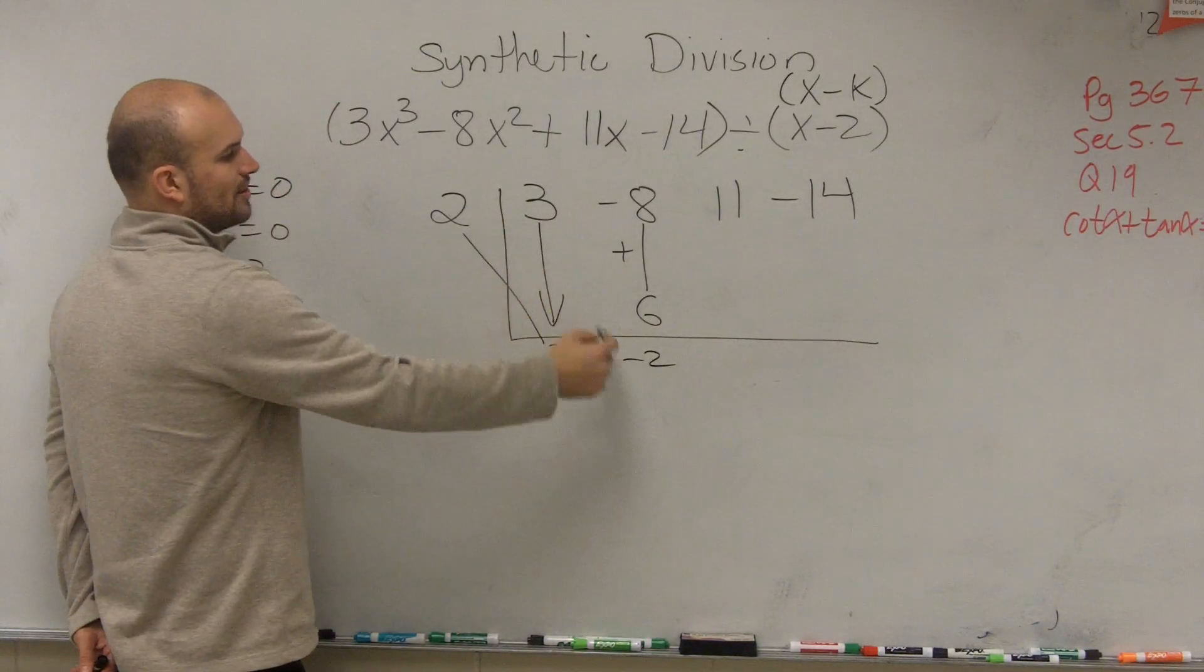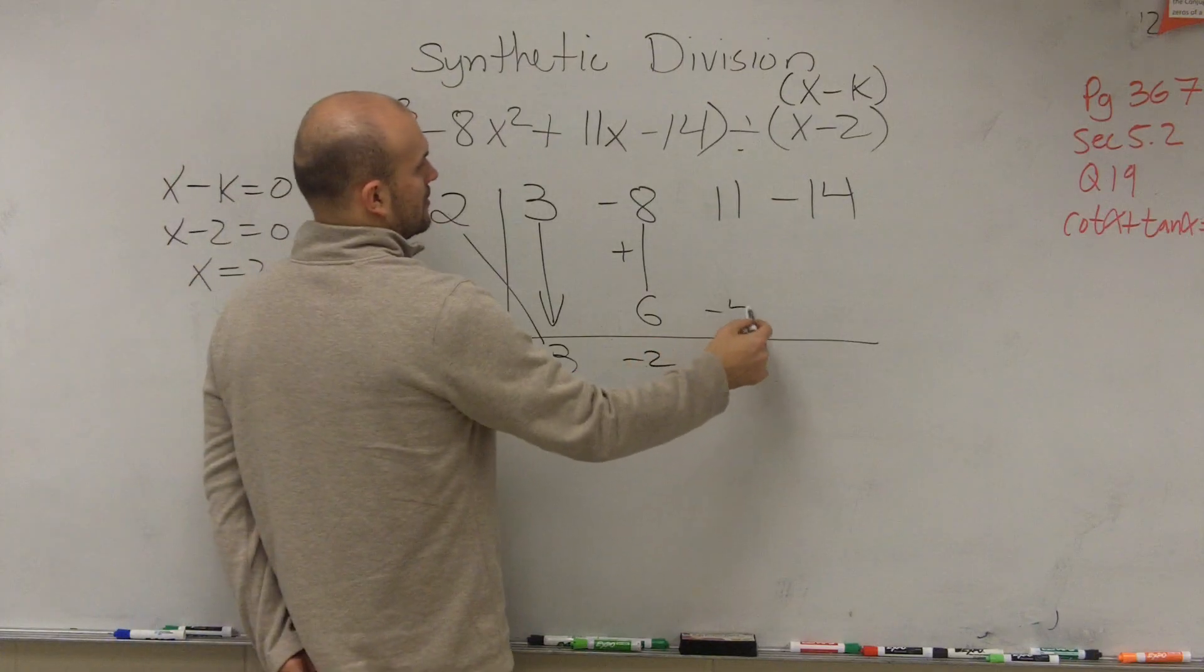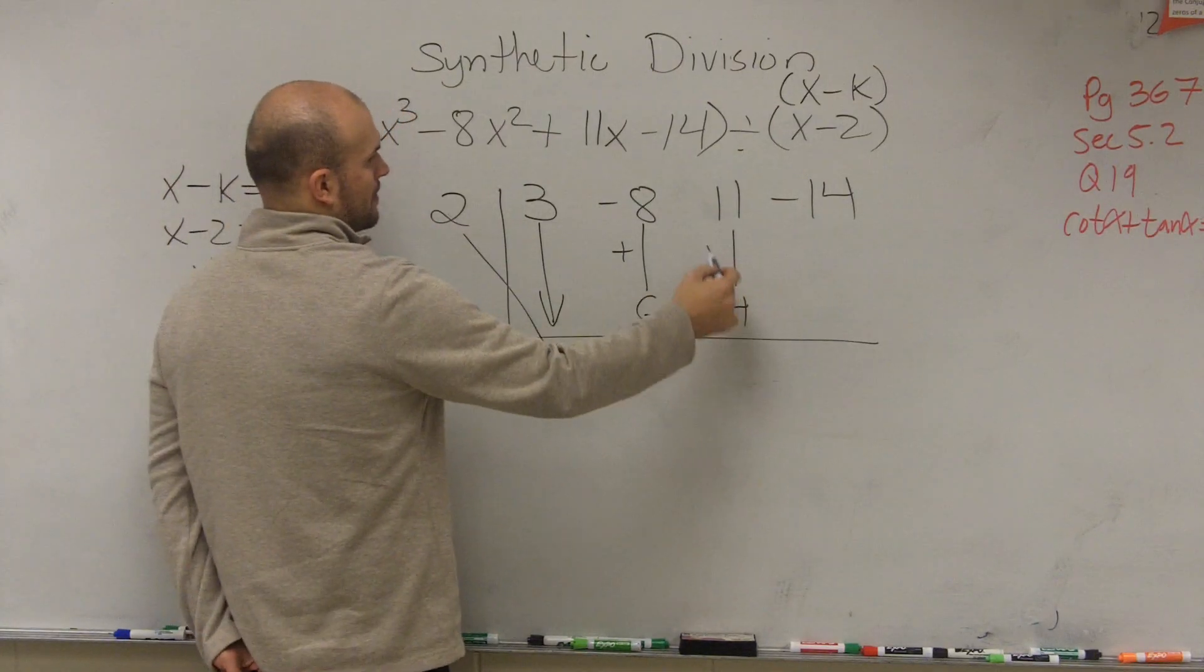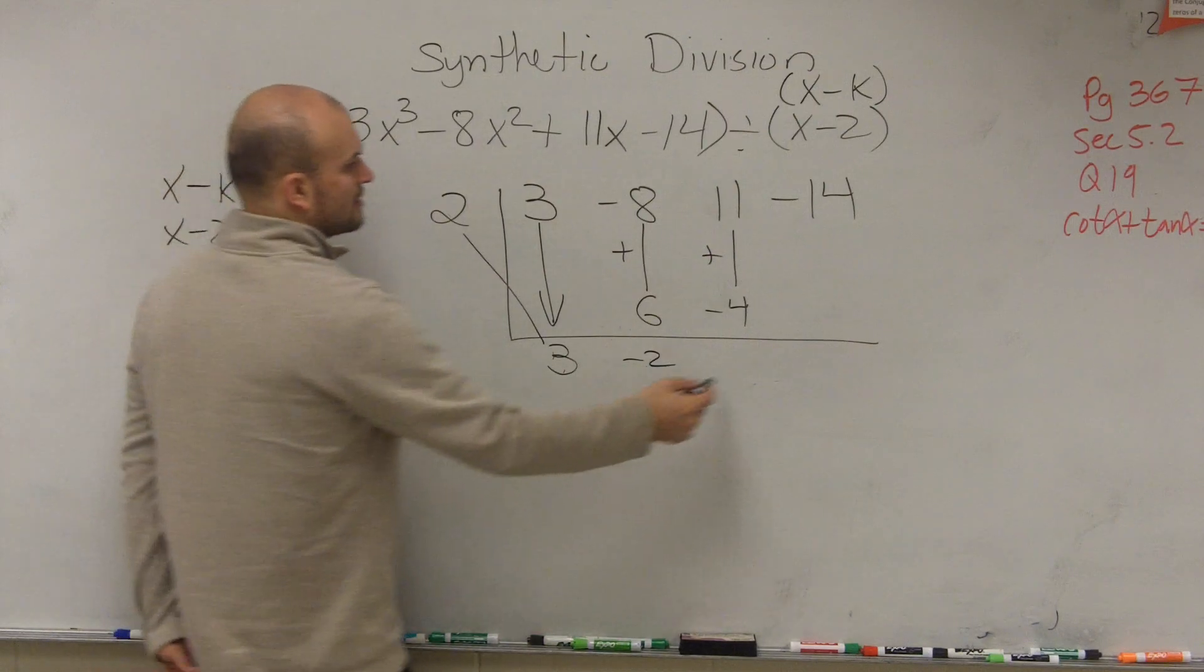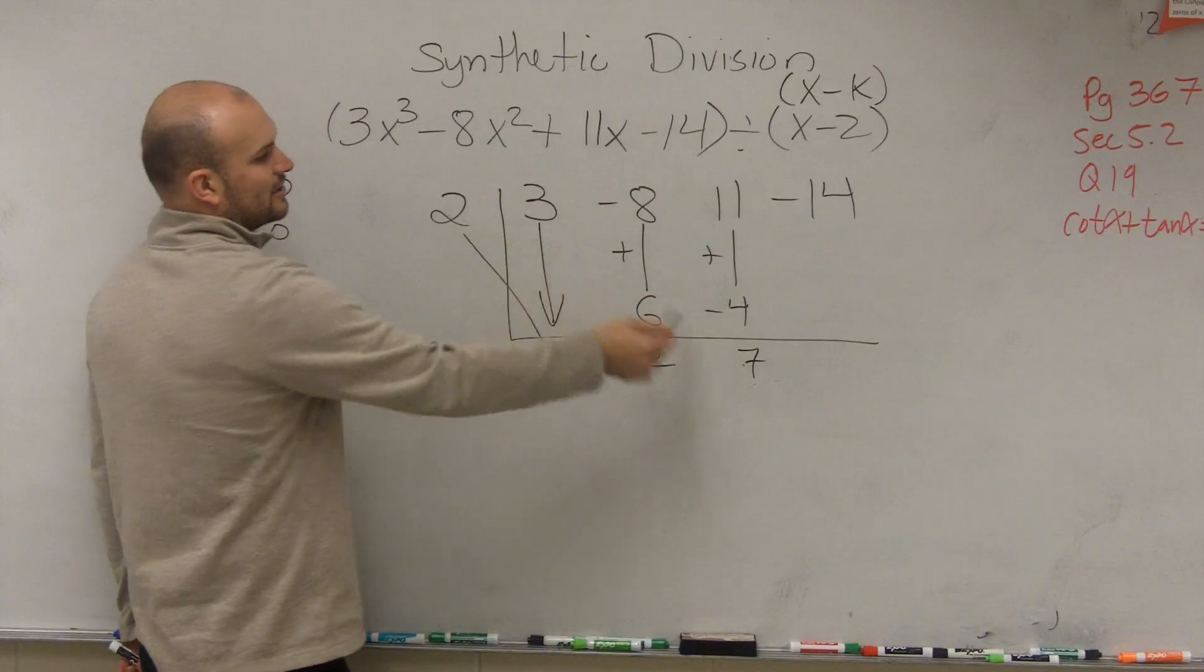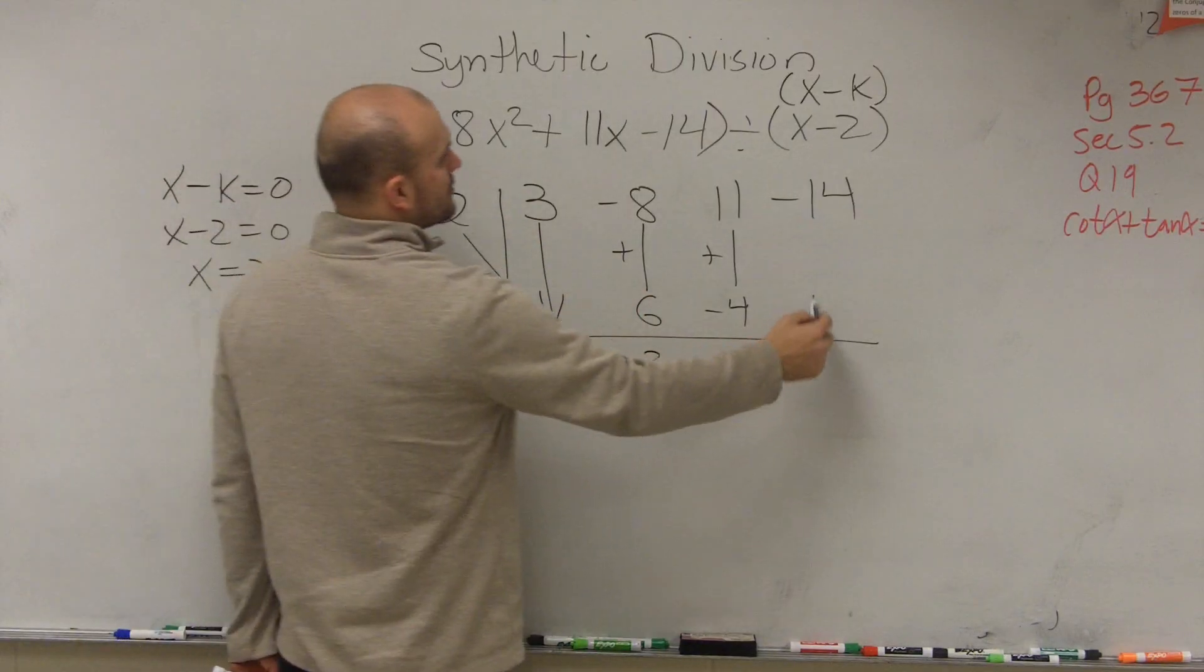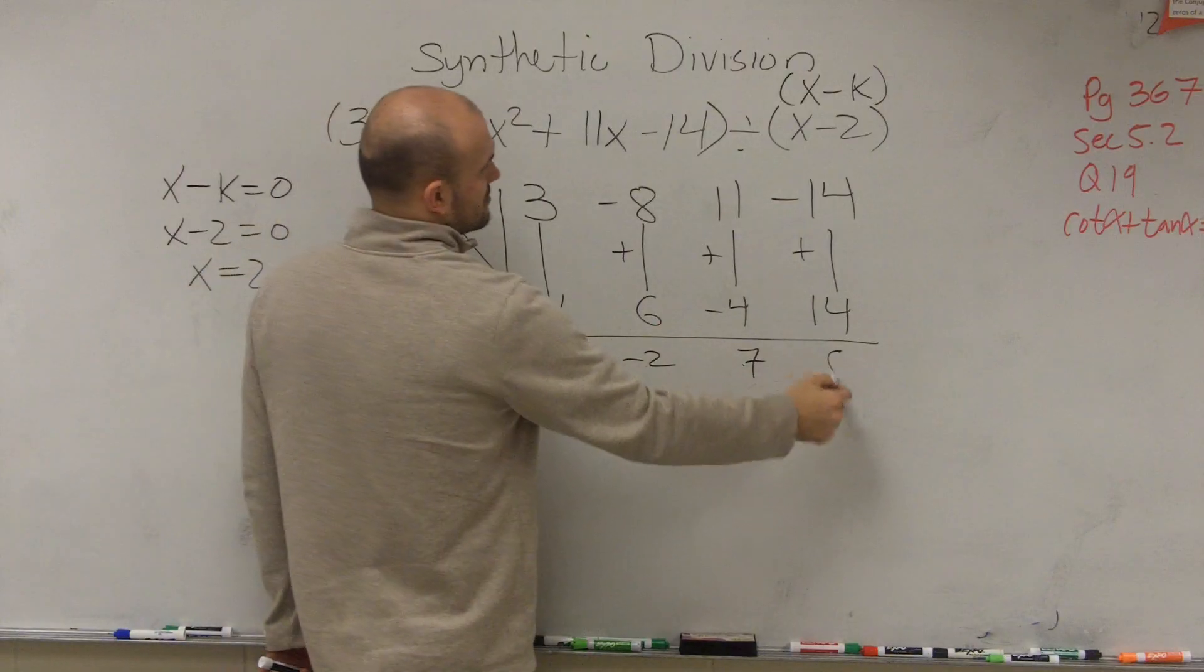Then multiply the diagonal: negative 2 times 2 is negative 4. Add: 11 plus negative 4 is positive 7. Multiply the diagonal: 7 times 2 is 14. Add the vertical: 0.